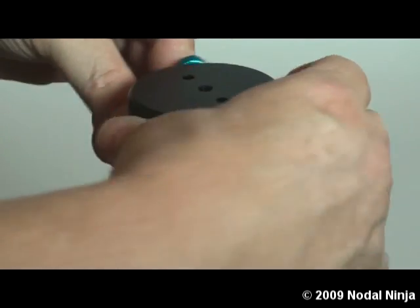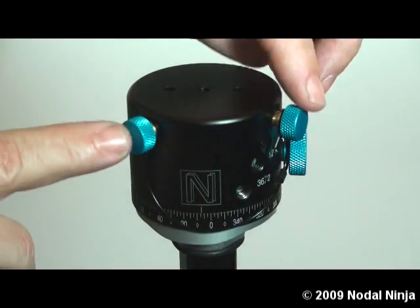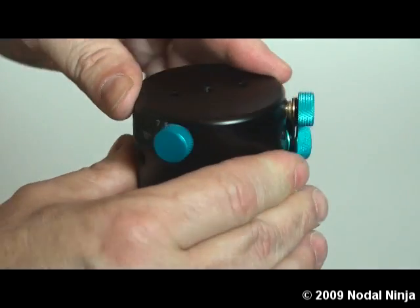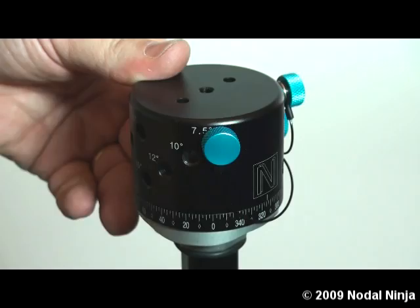Now there are four detent options available on this rotator that require the use of both knobs. One of those is the 3.75-degree click stop.